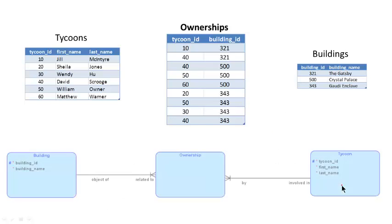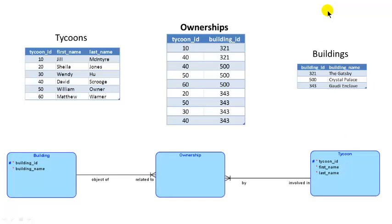Let's see how this translates into an entity relationship diagram. You have Building and Tycoon — that was originally the many-to-many relationship. Now we've introduced a new entity type, an associative entity, that corresponds to this table. We call this entity type 'Ownership.' Remember, entity types are named with singular nouns, so we call it Ownership. Table names we tend to name with plural nouns.